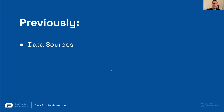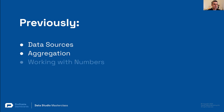Previously on data modeling, we talked about data sources which are used to grab data from data connectors, store them, and provide data to charts. Data sources are the place where we perform data modeling — data modeling in Data Studio lives within a data source. We looked at different aggregation methods for metrics: the ways that we reduce a number of metrics into a single one — summing them up, averaging, maximum, minimum.